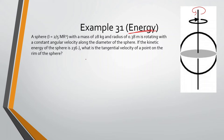We know linear kinetic energy is 1/2 mv². So for rotation, it should be something similar: kinetic energy of a rotating object is 1/2 I ω², where instead of mass we have the rotational inertia, and instead of velocity we have omega, the angular velocity squared. Let's plug this in.